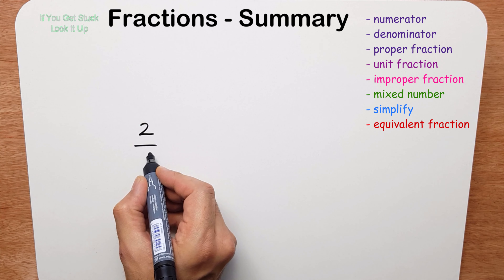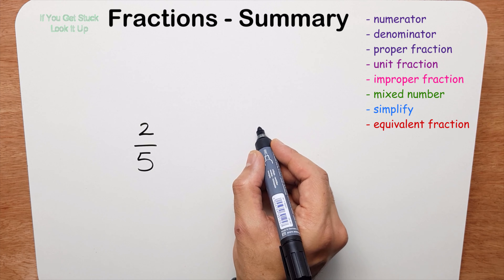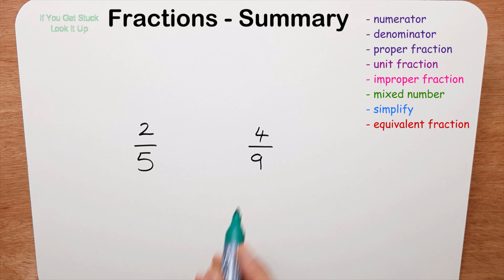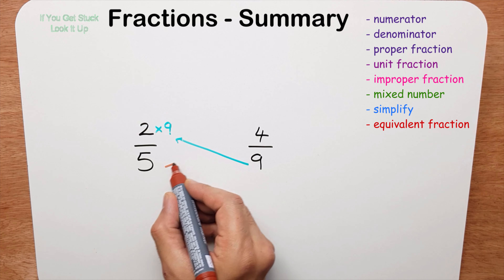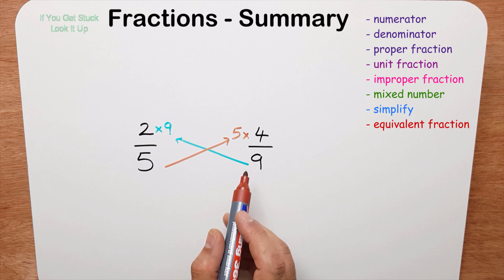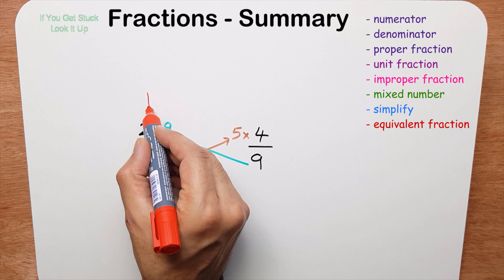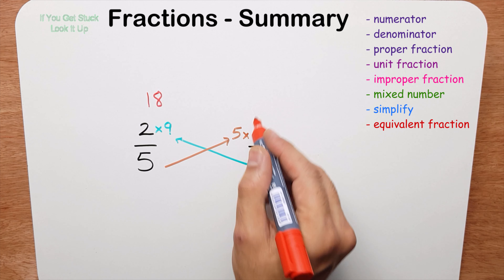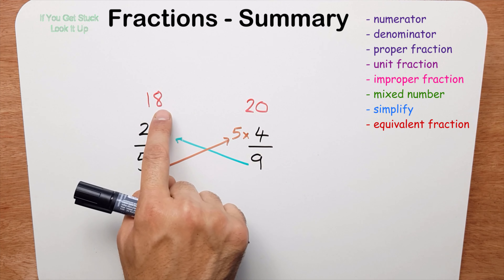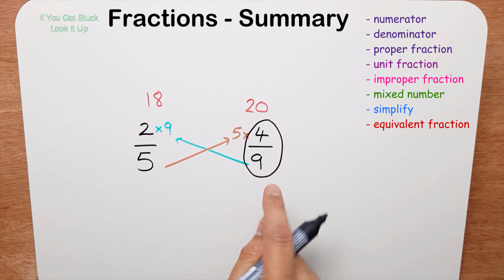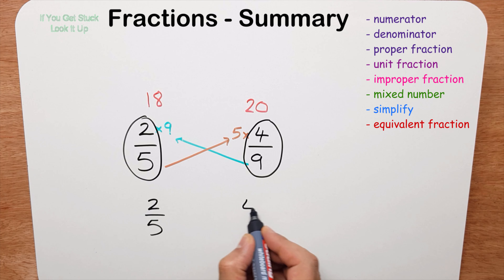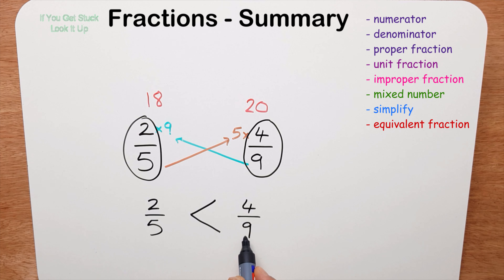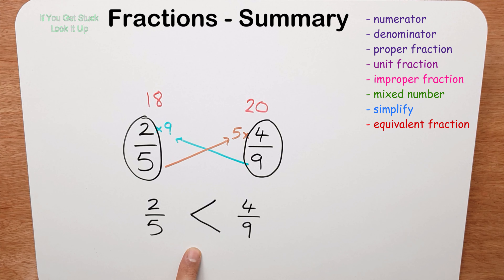Now we were also comparing two fractions, for example two-fifths and four-ninths. The way we do it: take the nine and multiply it with the two, and take the five and multiply it with the four. Two times nine is eighteen and five times four is twenty. Twenty is bigger than eighteen, so four-ninths is bigger than two-fifths. I can write that as: four-ninths is greater than two-fifths, or two-fifths is less than four-ninths.